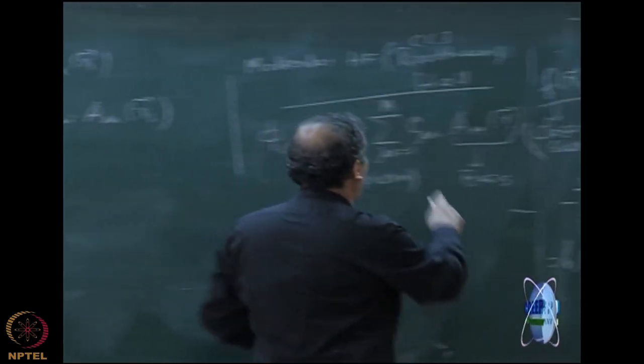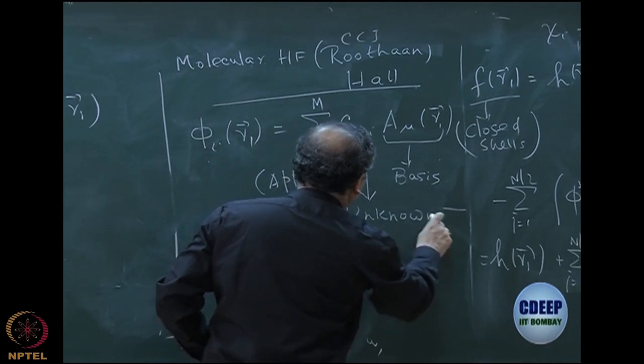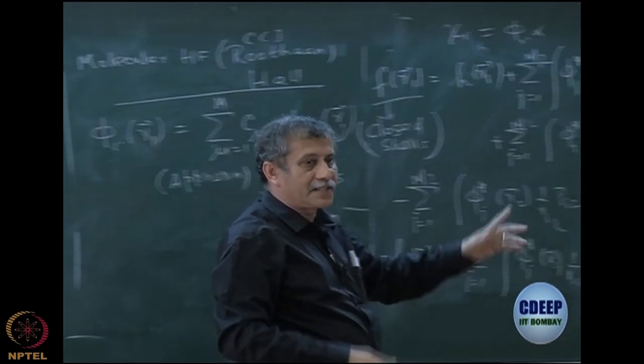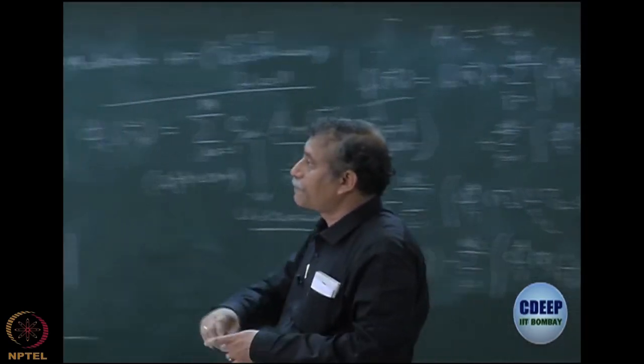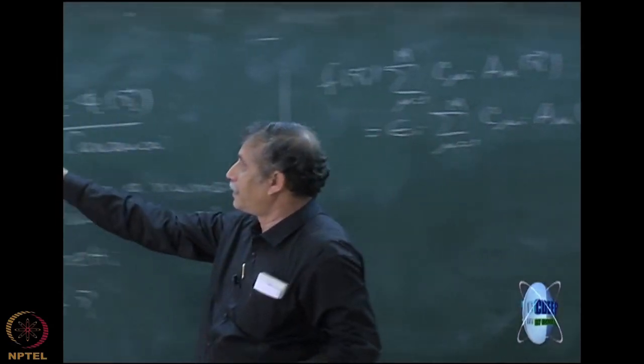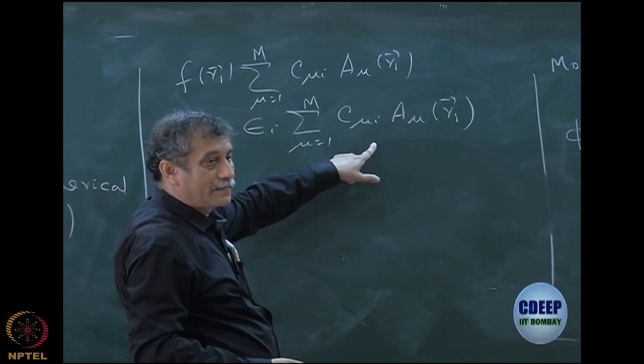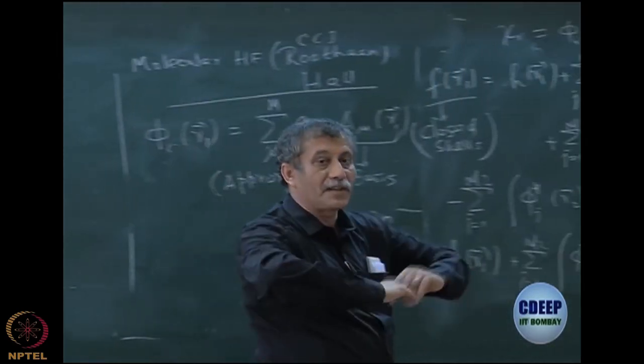What I have done? These C mu i's are my unknown coefficients. This is known, basis is known. So your problem of Hartree-Fock was originally to find phi i of R. Now the problem of Hartree-Fock is to find these coefficients. If I know the coefficients, I know phi i of R. So my problem has changed.